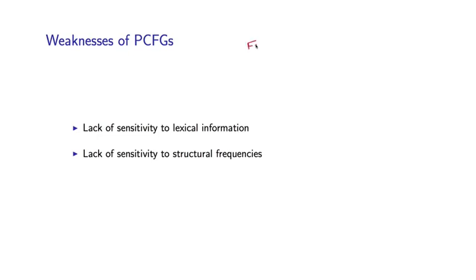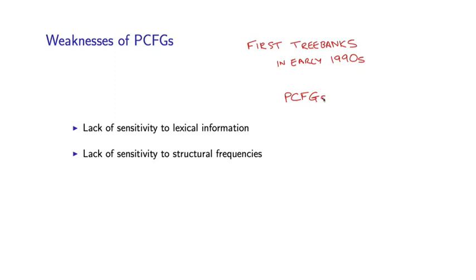Let me give some historical background. The first tree banks were created in the early 1990s, and that was the first time we had data of this form from which we could learn, for example, a PCFG. When these resources became available, it was very natural for people to consider PCFGs. PCFGs have actually been around for a long time — known since at least the 1960s — and so people immediately applied PCFGs basically in the way shown in the last lecture.